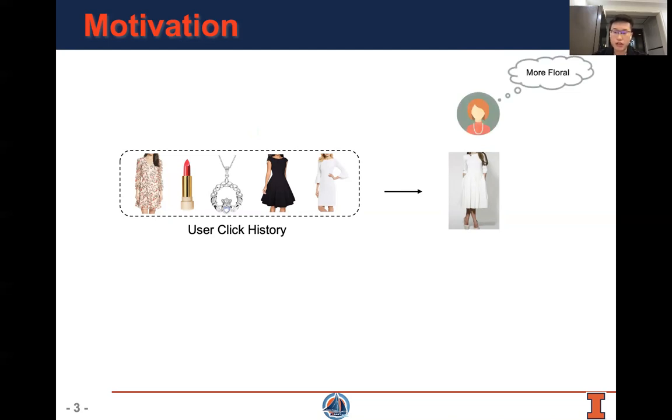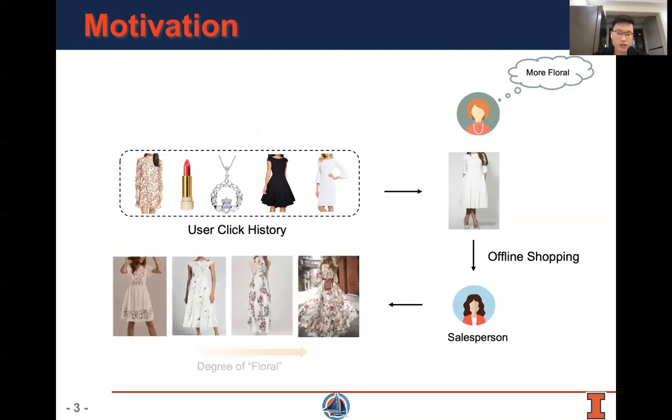In an offline shopping scenario, it is easy for the customer to ask salespersons to provide a series of products in which their degree of floral is in increasing order, and then the customer can conveniently select the most favorable one from those dresses. However, it is difficult for current recommendation systems to promote a sequence of items with gradient effect.